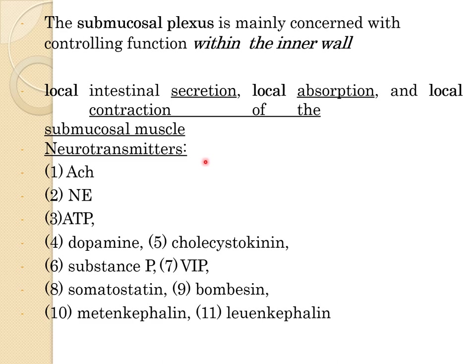The neurotransmitters involved in the enteric nervous system include ACh, NE (norepinephrine), ATP, dopamine, cholecystokinin, substance P, VIP, somatostatin, bombesin, met-enkephalin, and leu-enkephalin.